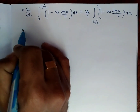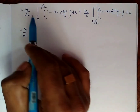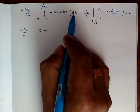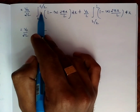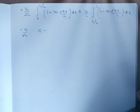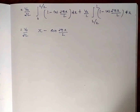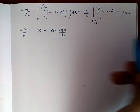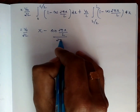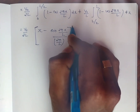So this equals V0 by 2L. We integrate: integral of 1 dx is x, minus integral of cos(2 pi x / L) dx, which gives sin(2 pi x / L) divided by (2 pi / L). We apply the limit from 0 to L/2.